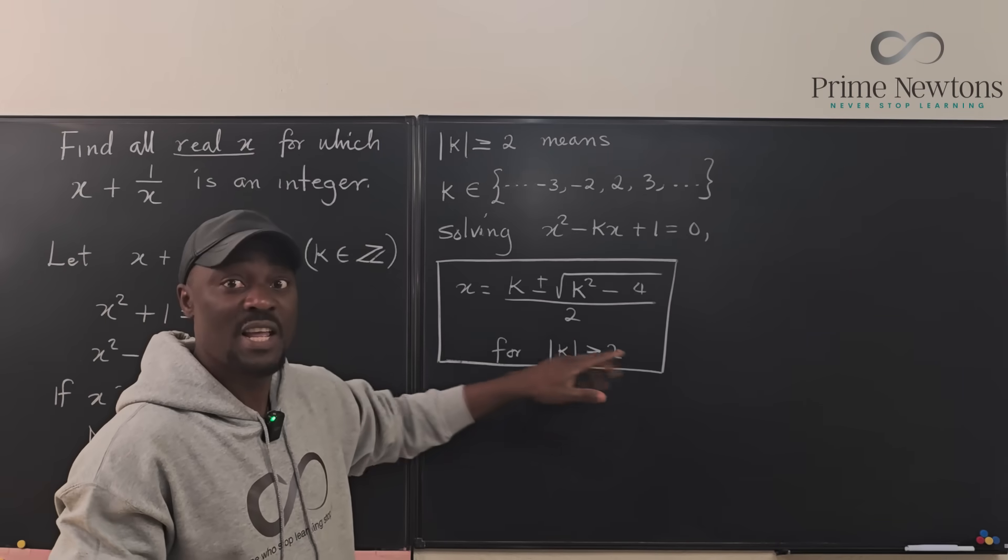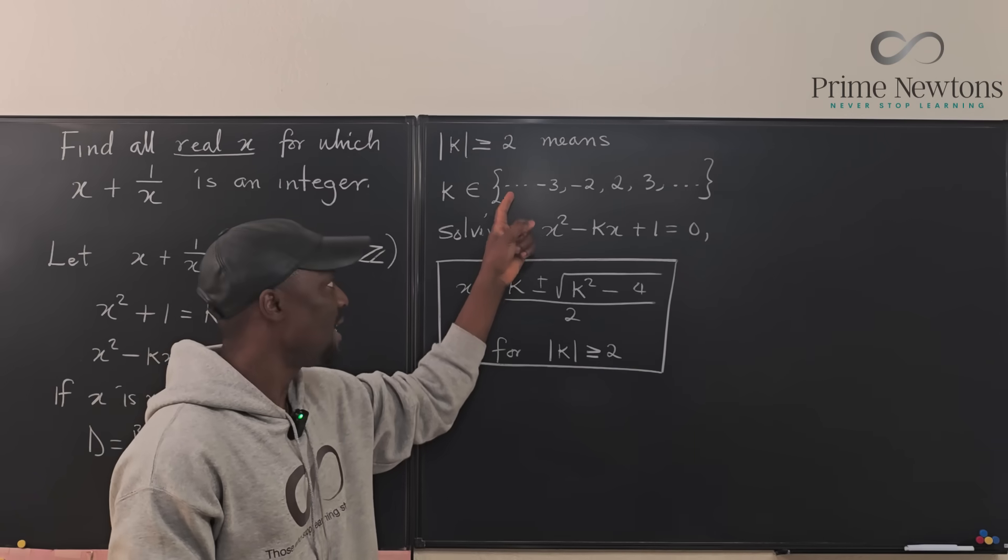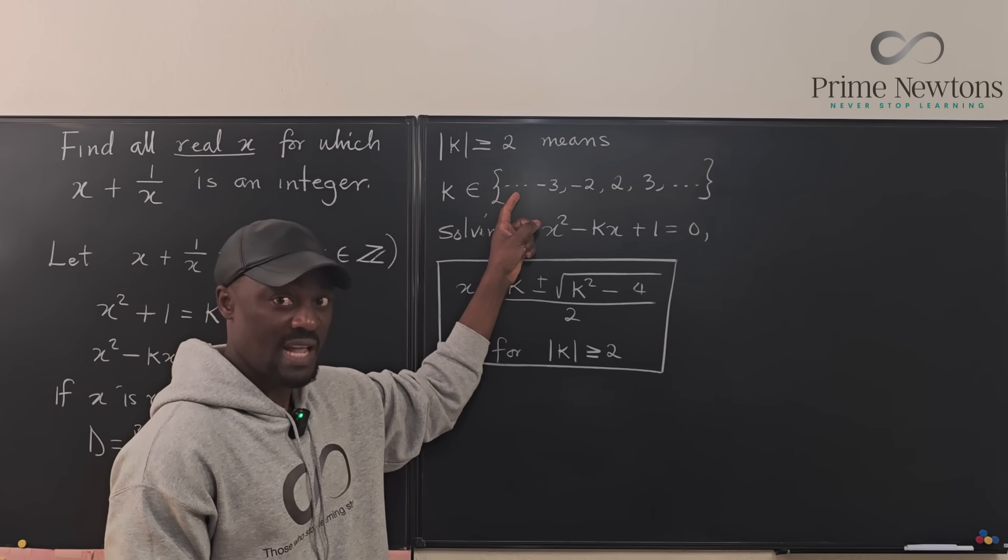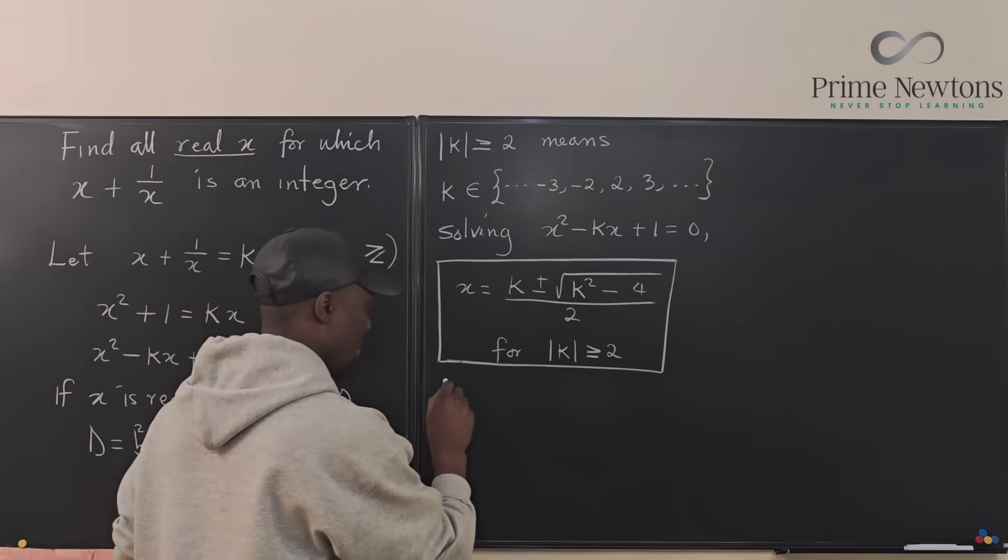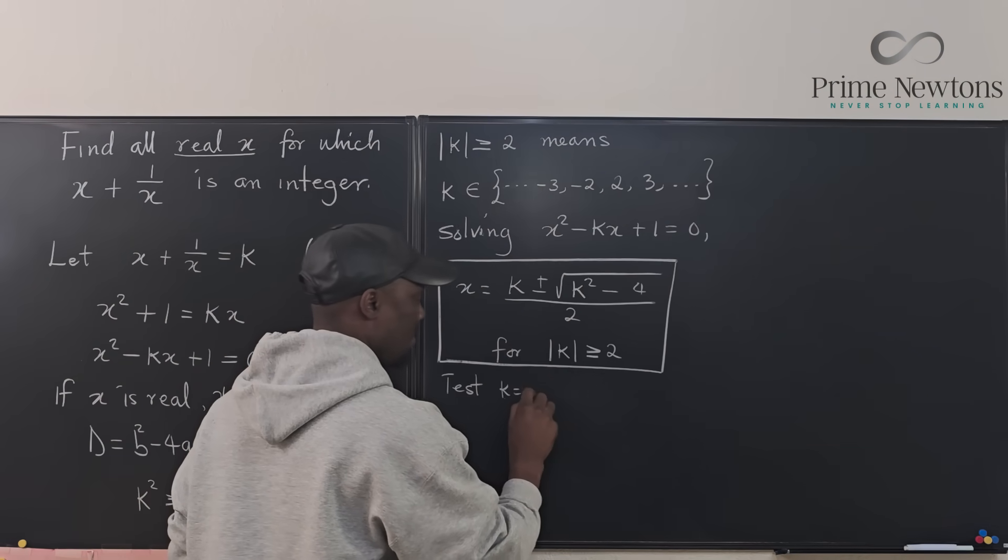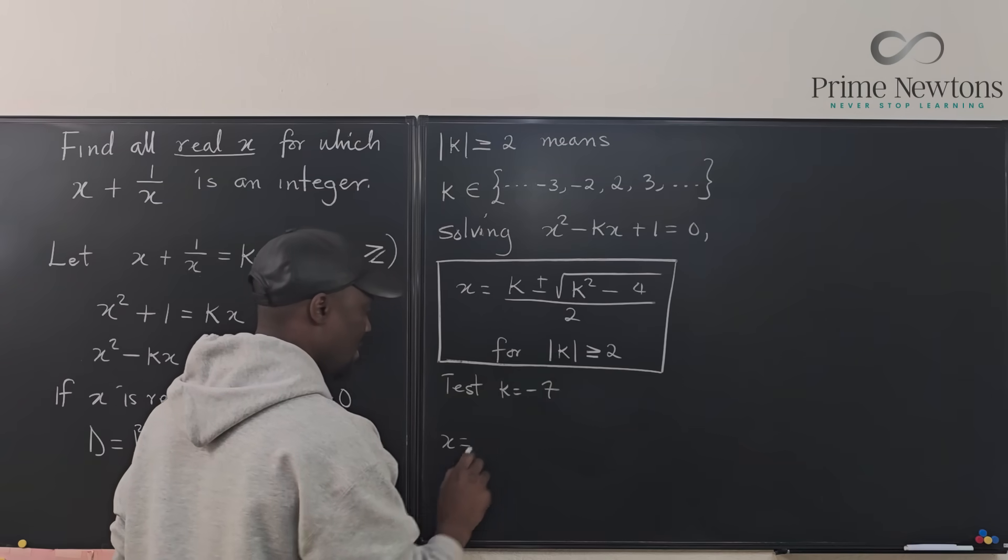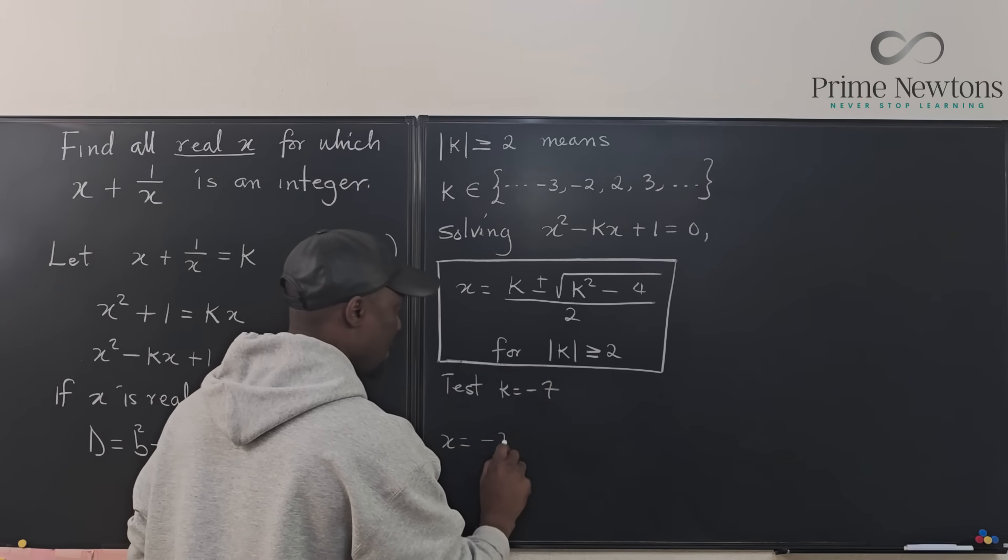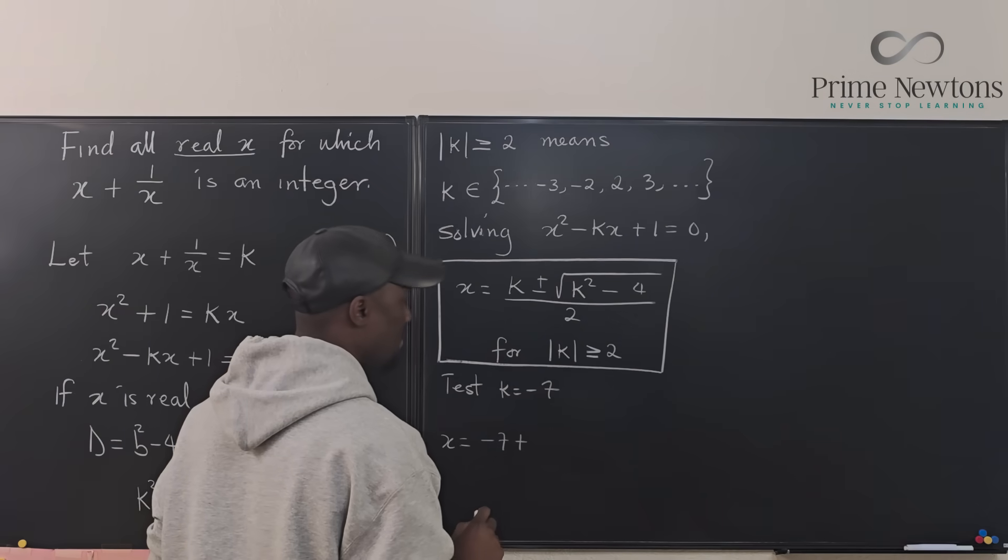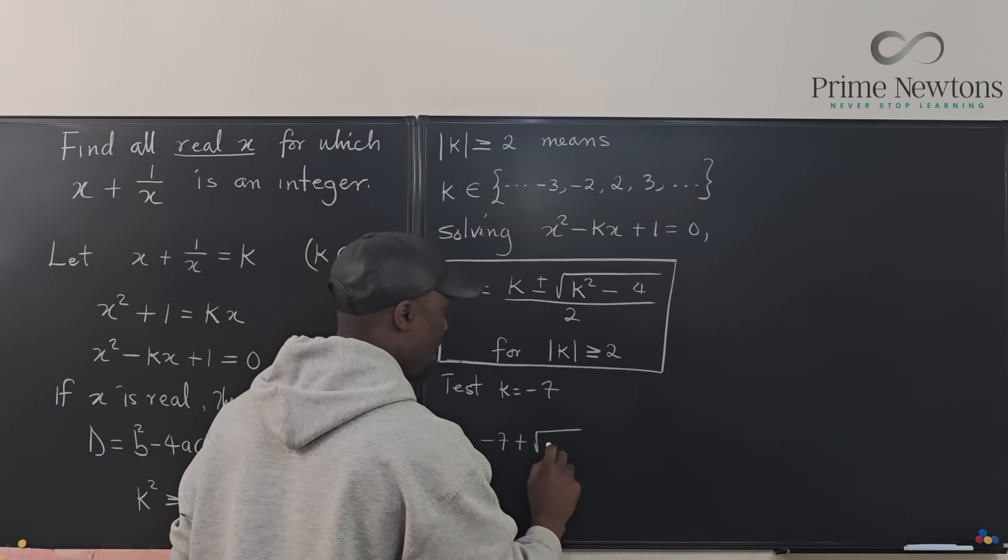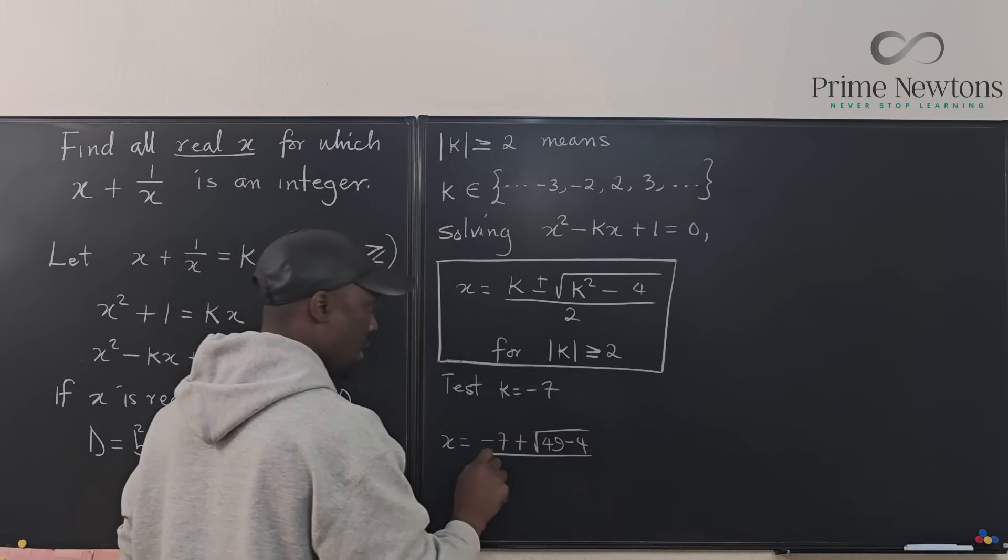Instead of me doing the proof of it by repeating and going the opposite direction, let's just pick a weird number. So I've chosen to pick the number negative 7 because negative 7 will be in this set. And what I'm going to do is say, test k equals negative 7. See what happens. We're going to have x equals negative 7, let's choose the plus option just to make life easy.